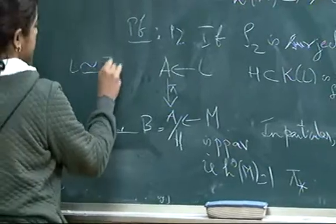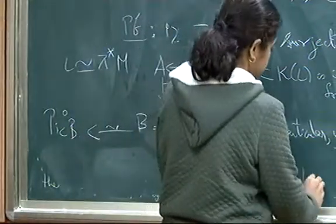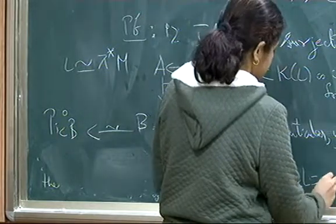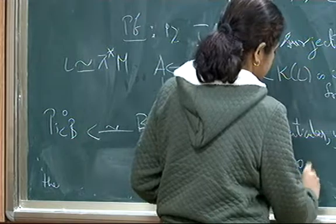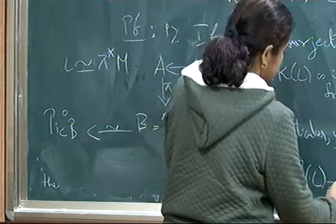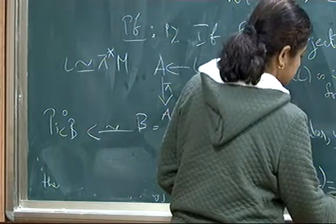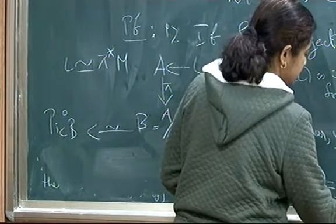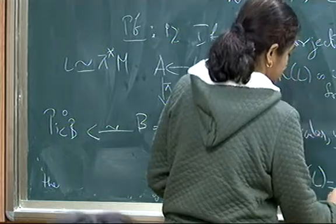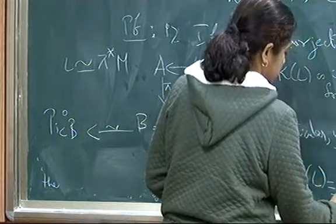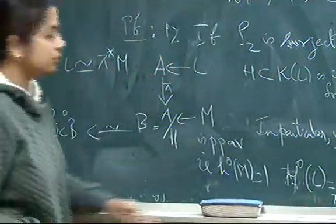Pi lower star of L actually just becomes, let me write sections of L is just direction of sections of M tensor L_chi. M is twisted by this degree 0 line bundles.